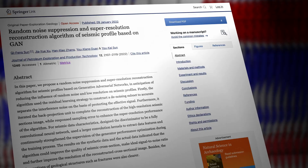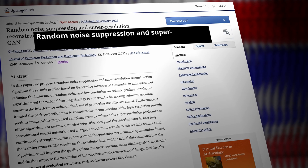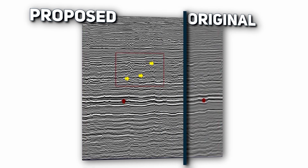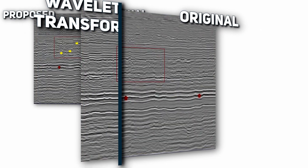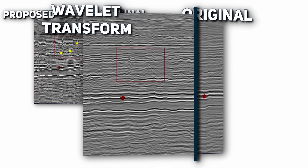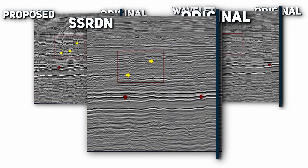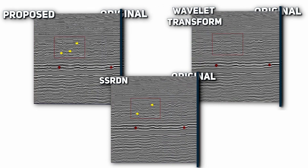There is a new algorithm taking super-resolution reconstruction of seismic data to the next level. In 2022, Ku Feng published a paper with astonishing results. Just take a look at the original seismic profile image affected by noise and low resolution, and compare it to the results of Wavelet Transform and SSRDN — which is the same method discussed in the first paper. The seismic profile after SSRDN reconstruction improved, but the resolution was still not as good as the one obtained by the proposed algorithm.